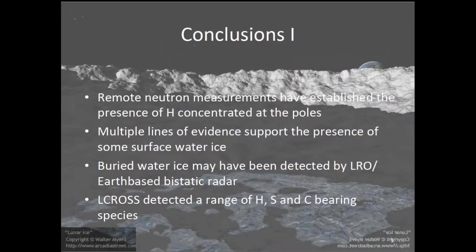In terms of composition, remote neutron measurements by Lunar Prospector and then LEND really confirmed the original hypothesis that there could be volatiles concentrated at the lunar poles. This was a critical measurement. Craig went over some of the limitations and how he's going to be improving that situation.